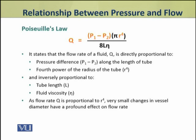The flow rate is inversely proportional to two factors: tube length and fluid viscosity, eta. Because the flow rate is directly proportional to the fourth power of the radius of the tube, if the radius of the vessel changes, it has a profound effect on the rate of flow.